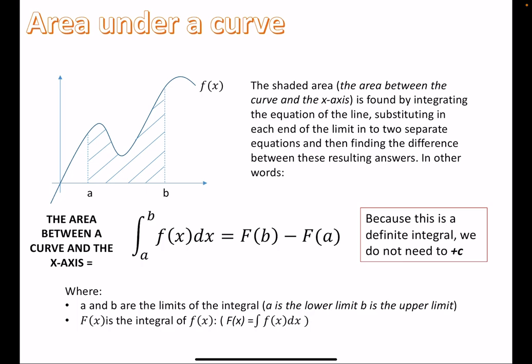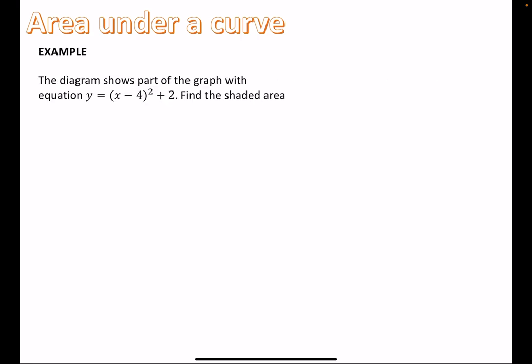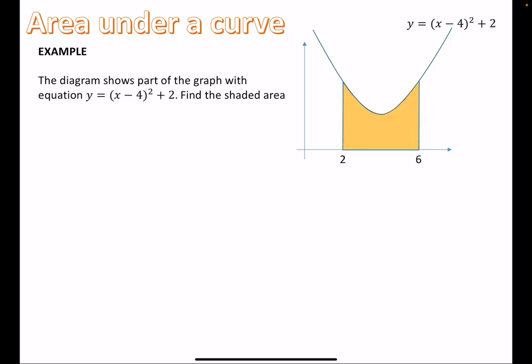Because this is a definite integral, we don't need to worry about the plus c. When we don't have the numbers a and b we get a plus c at the end, but because we have those two values, we don't need it here. Straight away, an example: the diagram shows part of the graph with equation y = (x − 4)² + 2. Find the shaded area. You already know what this graph looks like. The shaded area comes between x = 2 and x = 6 and the x-axis — that space there that we want to find the area of.